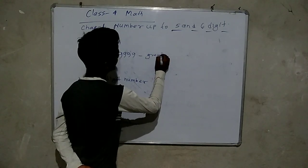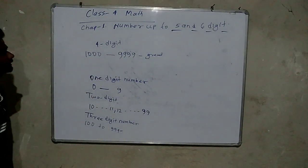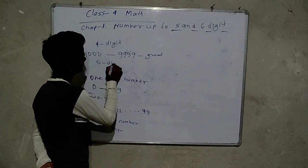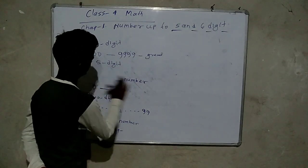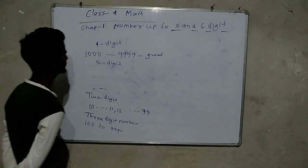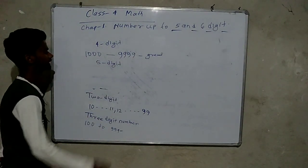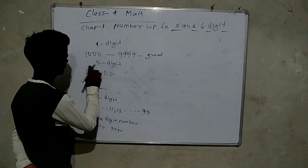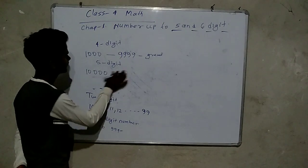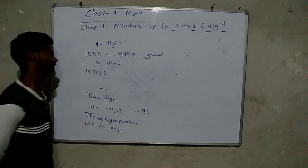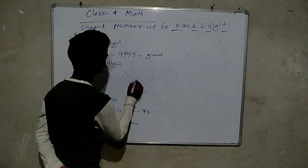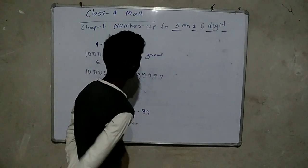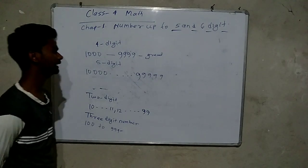A 5-digit number's smallest number will be 10,000 and the greatest number will be 99,999.